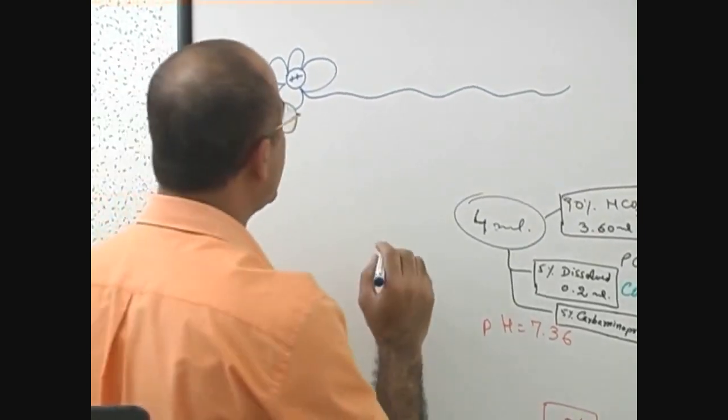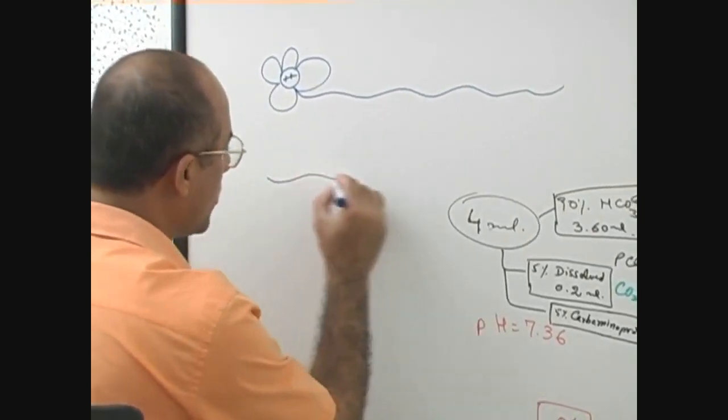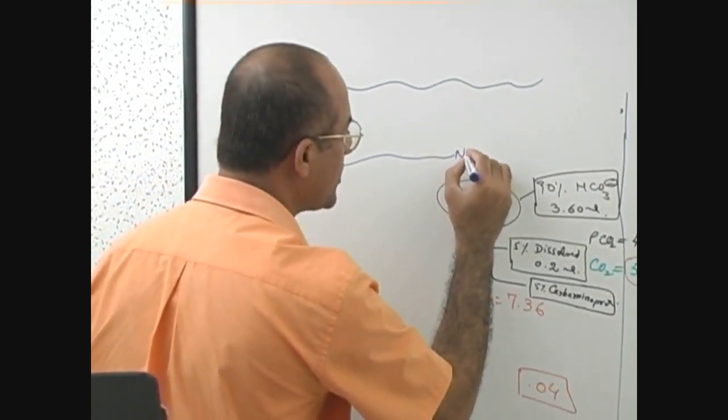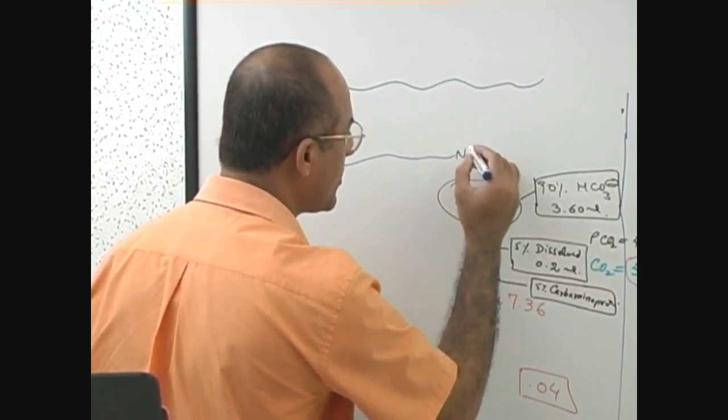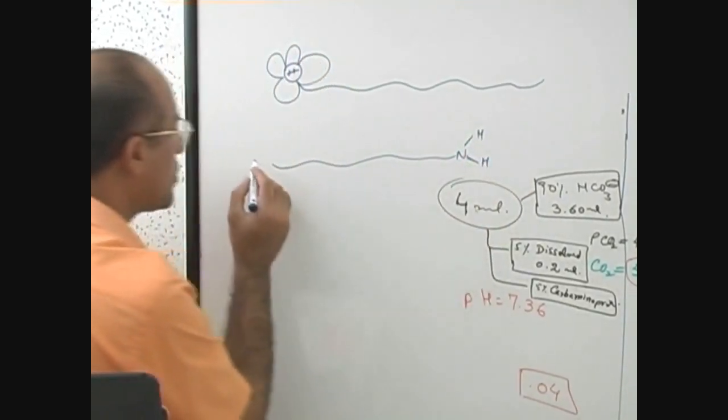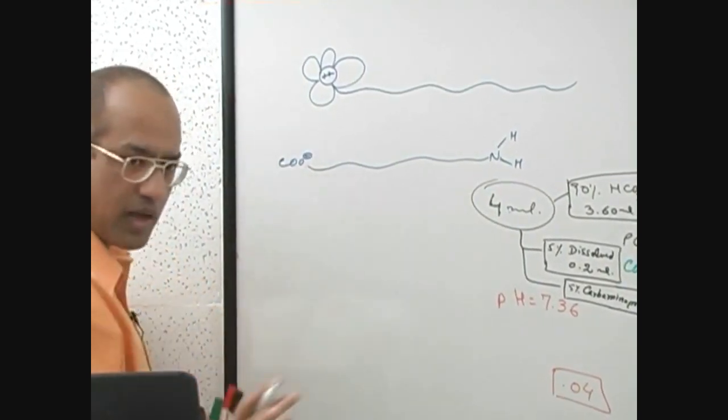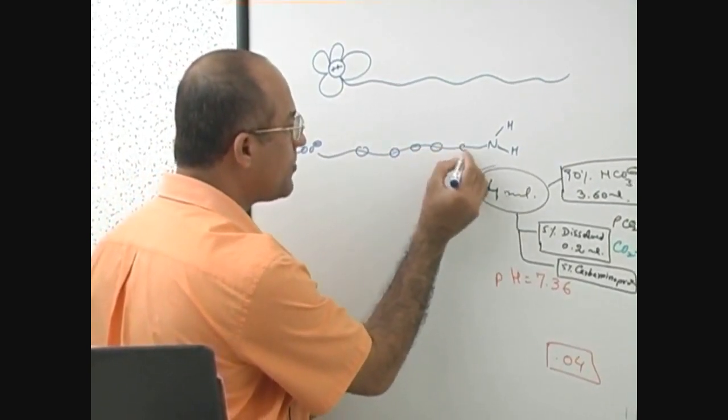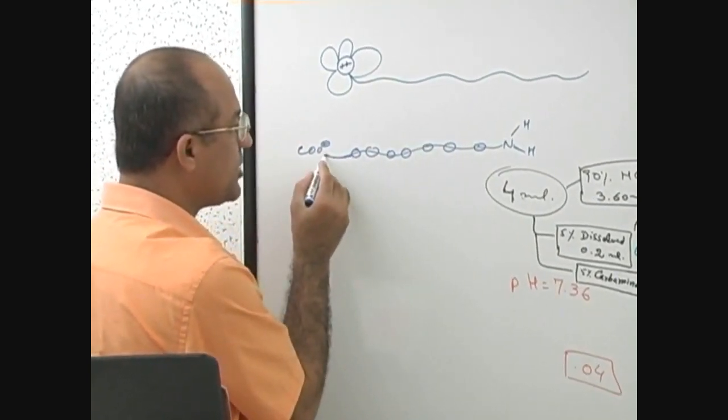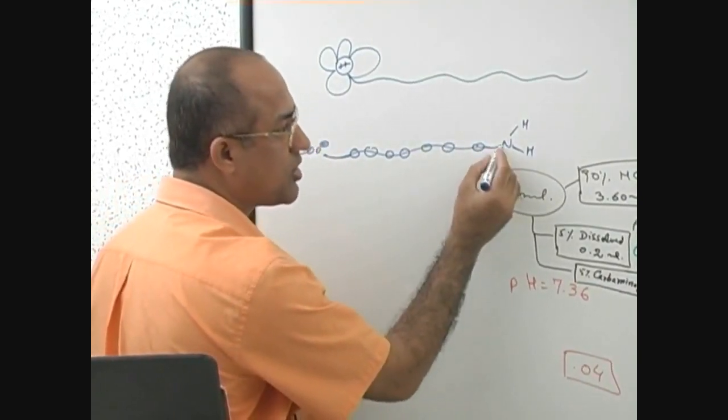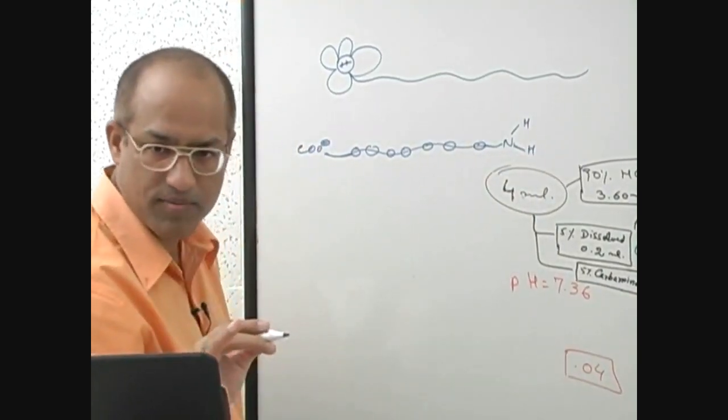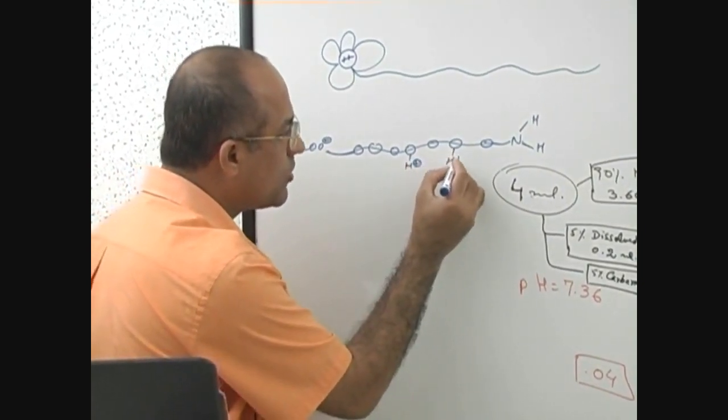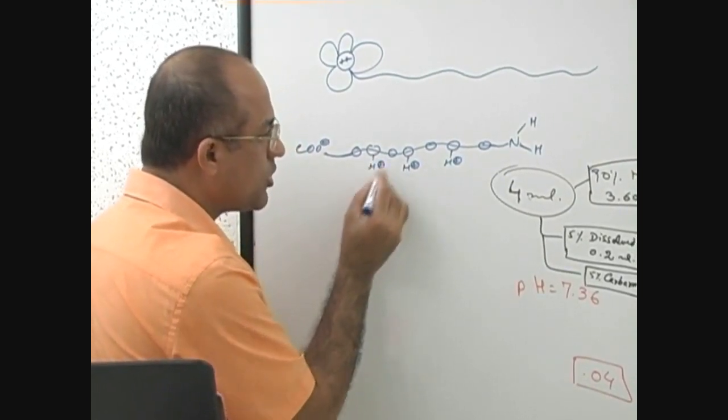This is heme and this is globin chain. Globin chain, of course, like all other peptides, should have on one side amino NH2. Another end should be carboxyl. And in between there should be many amino acids. This is terminal amino acid on one side; this is amino group of terminal amino acid on other side.